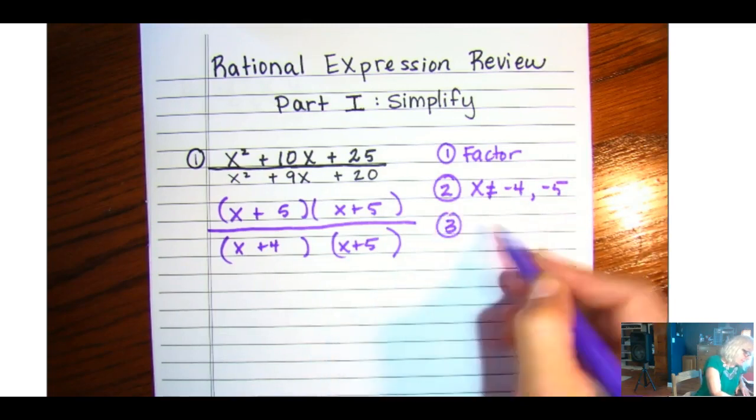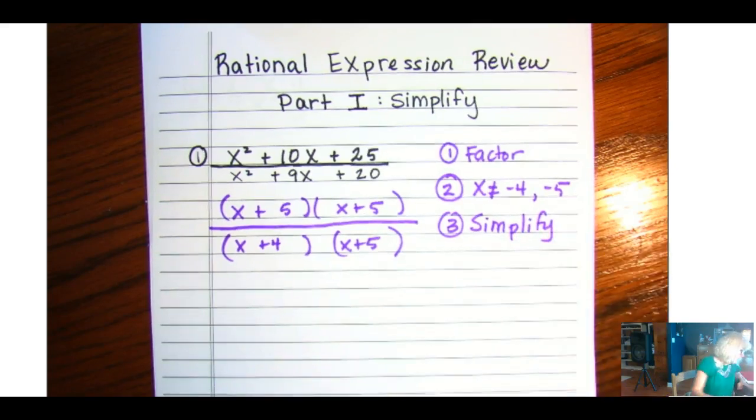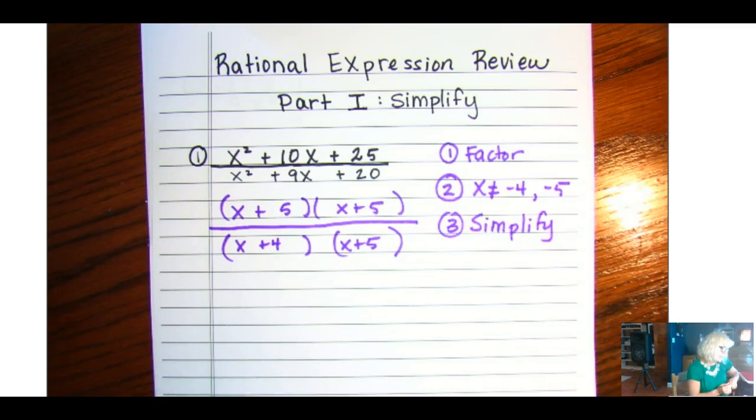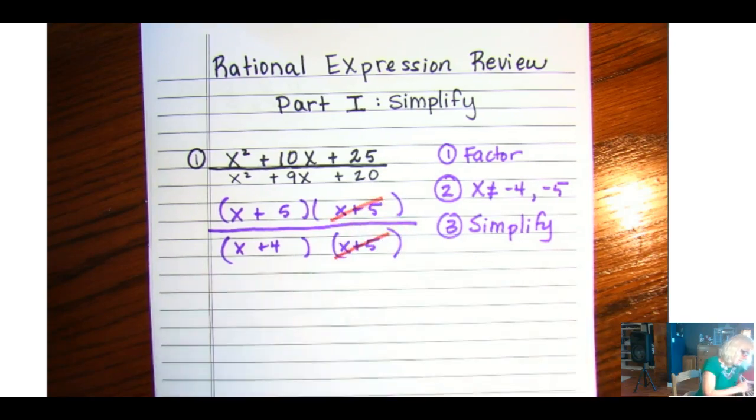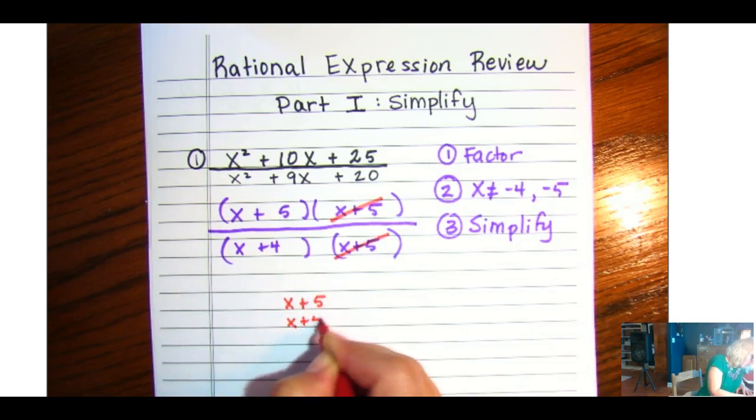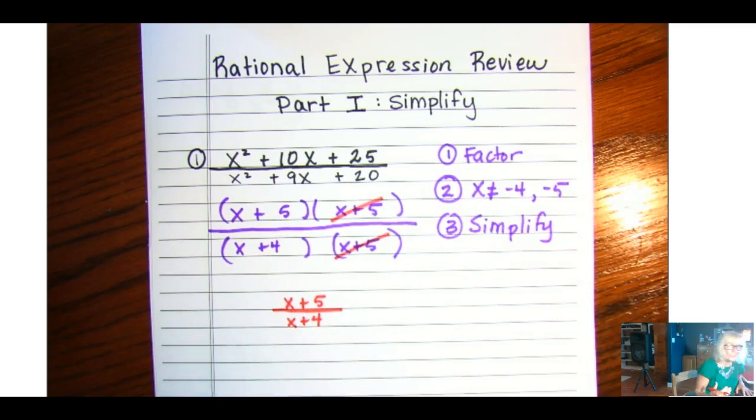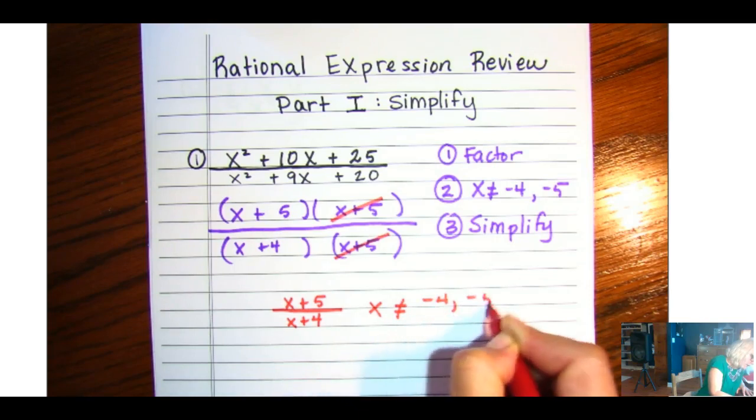And then our third step is to remember a rational expression is just a fraction anyway, and we always have to simplify our fractions. So I'm going to grab my canceling, crossing out pencil or pen, and I'm going to go ahead and cross out what matches on top and bottom. So remember when we write our final answer, you've got to include your restrictions. So remember x cannot equal negative 4 and negative 5.